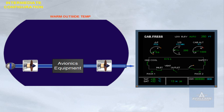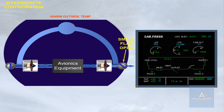In warm ambient conditions, the system may go to an intermediate configuration. This happens when skin temperature is above a specified threshold and the aircraft is in flight or on the ground with thrust levers at takeoff power. In this situation, the equipment is cooled with air coming from the avionics compartment and air coming from the skin heat exchanger. A small internal flap on the extract valve opens to exhaust some of the heated air overboard.